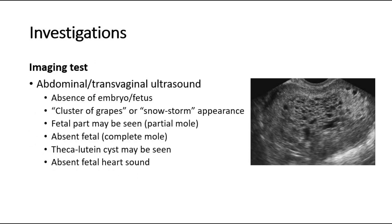For imaging tests, it is abdominal or transvaginal ultrasound. It is used mainly to rule out an intrauterine pregnancy, where there is absence of embryo or fetus. In hydatidiform mole, we will be able to see a cluster of grapes or snowstorm appearance — it's like a honeycomb appearance, as shown in the picture here. We might see fetal parts which may indicate partial mole; if absent, it might indicate complete mole. Theca-lutein cysts may be seen, and there will be absent fetal heart sound.